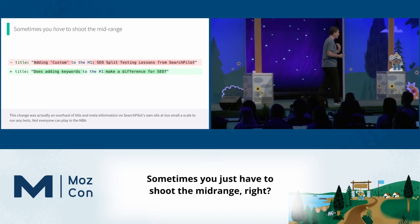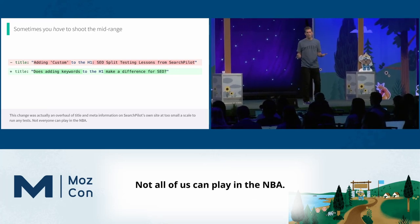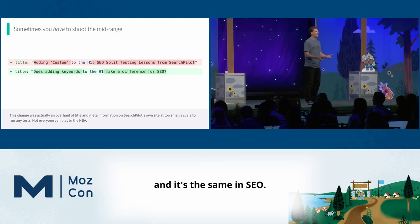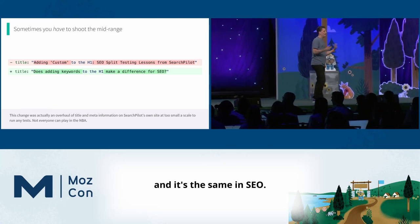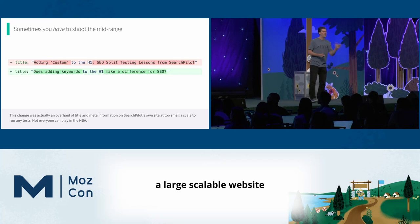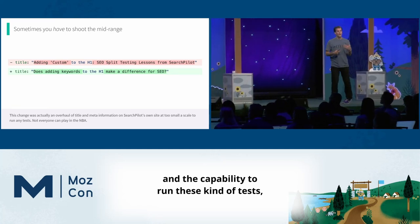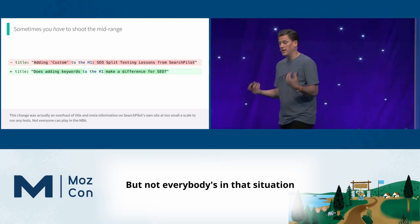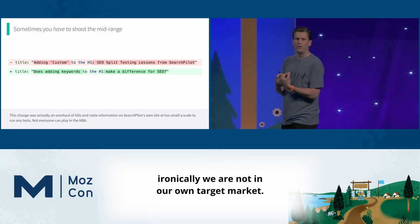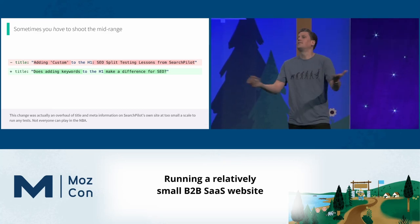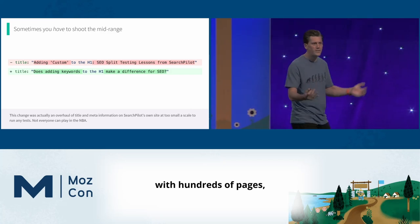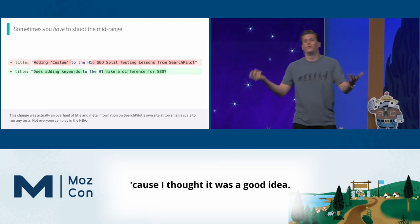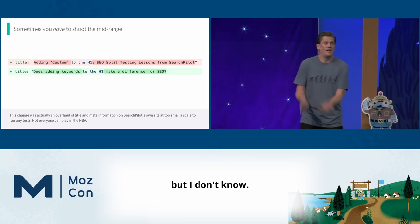I mentioned it was our site. Sometimes you just have to shoot the mid-range. Not all of us can play in the NBA — I never could shoot the three, I kind of have to live in the mid-range. In SEO, if you have a large, scalable website and the capability to run these kind of tests, that's the future. But not everybody's in that situation. SearchPilot ourselves, ironically, are not in our own target market — running a relatively small B2B SaaS website with hundreds of pages, not tens of thousands.